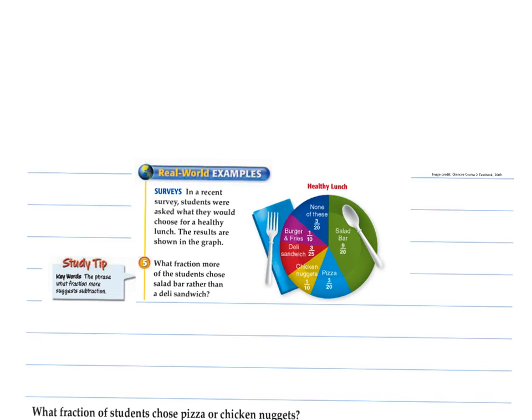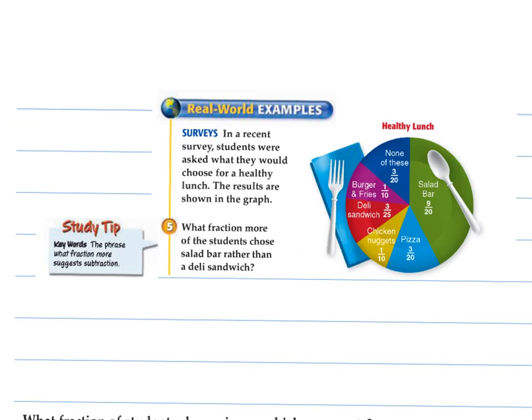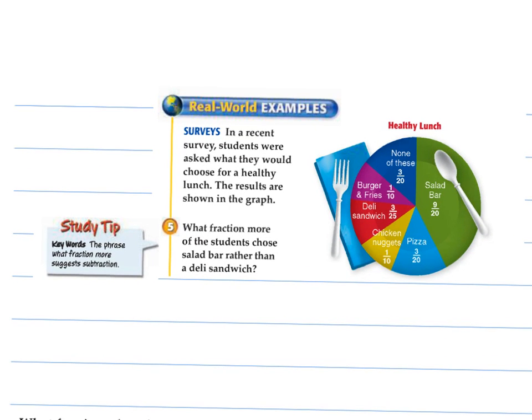Okay, a couple word problems here. It's going to be helpful for you to stay engaged and listen to the language, because that's kind of the toughest part for some of us. So we see fractions left when we're looking at surveys. In this survey, students were asked about what they would choose for a healthy lunch. The results are shown here. So when we read this, what fraction more of the students chose salad rather than a deli? This is where we're comparing something to another and looking for how many more. So what fraction more suggests subtraction. So what we're trying to subtract is our salads. We're taking the deli sandwiches.